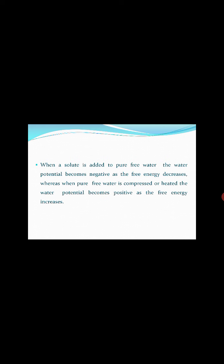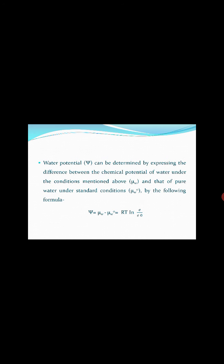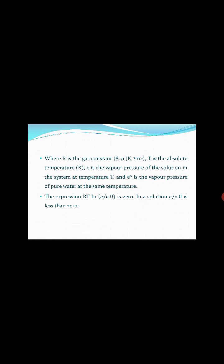Water potential, denoted by psi, can be determined by expressing the difference between the chemical potential of water under the mentioned condition and that of pure water under standard conditions. The formula is: psi equals mu_w minus mu_w0, or equivalently RT times ln(e/e0). Here, R is the gas constant with a value of 8.31 joules per mole, and T is the absolute temperature in Kelvin.